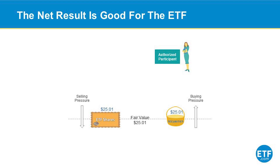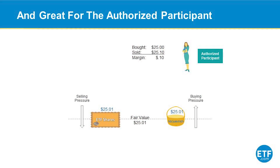And they're a buyer of all those underlying stocks, pushing those prices up. And they'll keep buying and selling like that until they've equalized out the price. So the ETF may now be worth $25.01, but that's what the basket of the stocks is worth too. It's great for the ETF, but it's also great for the authorized participant, because they were able to buy a basket of securities for $25 and sell the ETF for $25.10 — they made 10 cents on every share, knowing they can just deliver that basket and get the shares they'd already sold to the market.